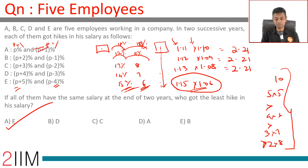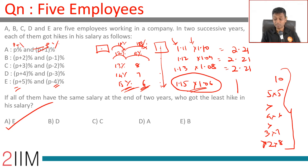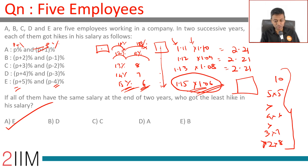We all know this principle, but it's applied in a slightly different context here. 1.11 into 1.10 vs. 1.15 into 1.06 — the endpoints are the same but the impact is smallest for E. So E should have had the highest salary beforehand and the least hike over the two years to arrive at the same endpoint. Who got the least hike? E.